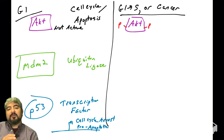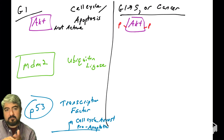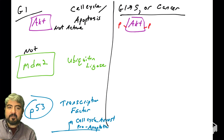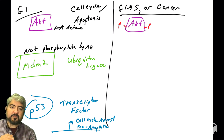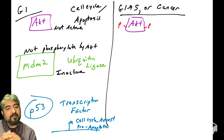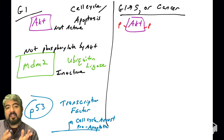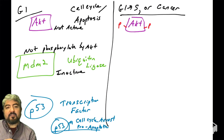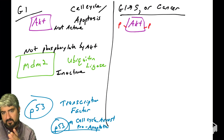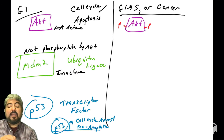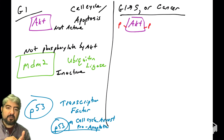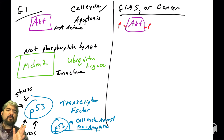In cells in G1, AKT is not phosphorylated and not active. MDM2, when not phosphorylated by AKT, is in an inactive state. So P53 will not be acted upon by MDM2, meaning P53 can trigger cell cycle arrest and apoptosis if needed. P53 can respond to many cellular stresses, allowing the cell to stop the cell cycle and trigger apoptosis.